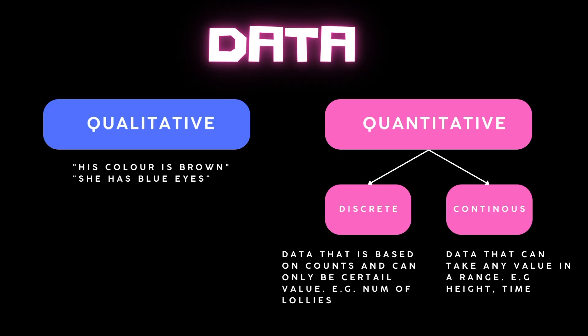Discrete data is based on counts and can only be a certain value — for example, the number of lollies in a bag or the number of coins in a bag. Continuous data, on the other hand, can take any value within a particular range. For example, height can vary from person to person — it can be from five meters to six meters — or it can be time, which can take any value and is not a fixed count.